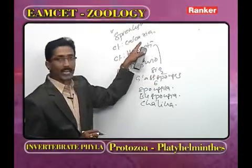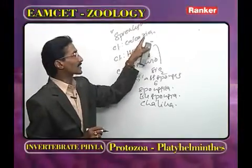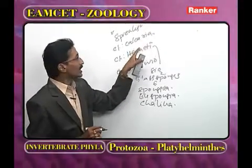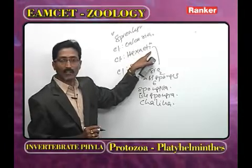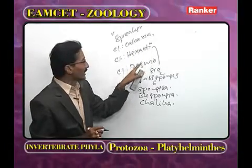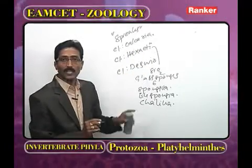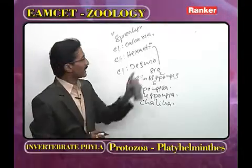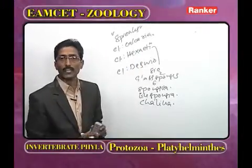In Calcarea, the larval form is calciblastula and amphiblastula. In Hexactinellida, the larval form is trichimella. In Demospongiae, the larval form is parenchymula. With this, the second phylum Porifera is complete.